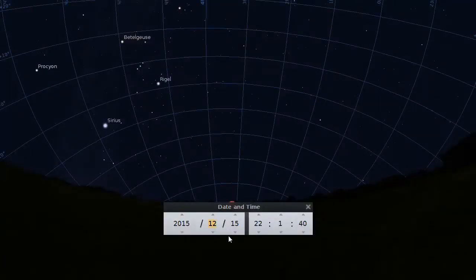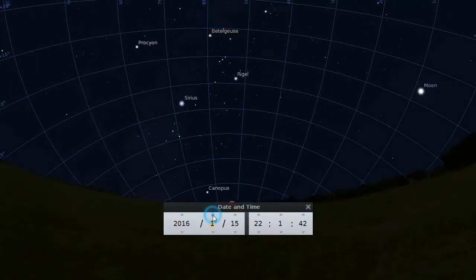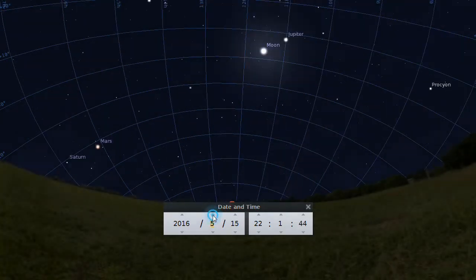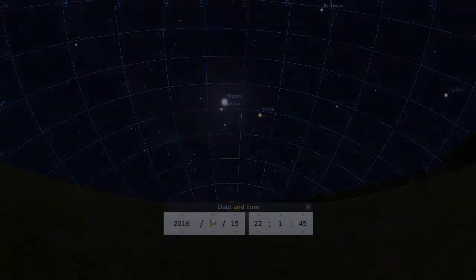This apparent motion, where the stars rise a little earlier each night, explains why the stars you see in the winter sky are different than what you see in the spring, the summer, and the autumn.